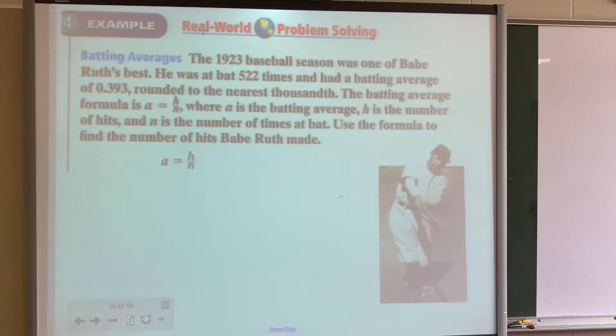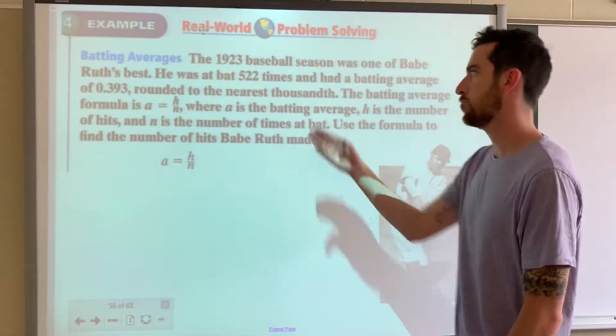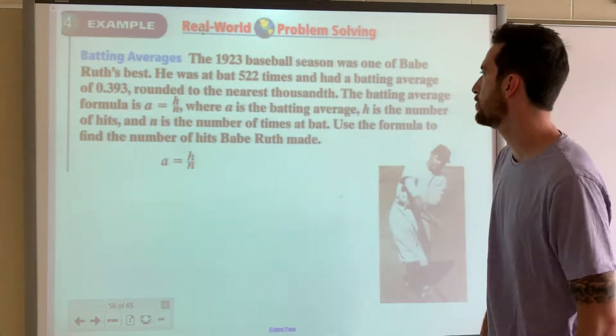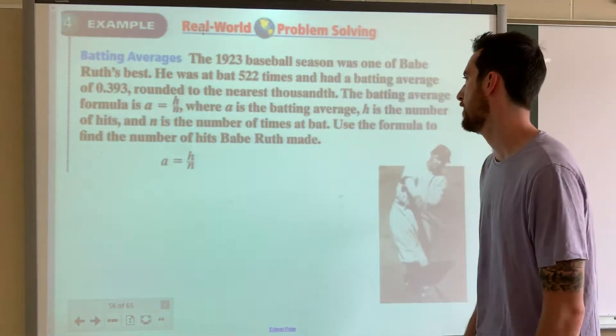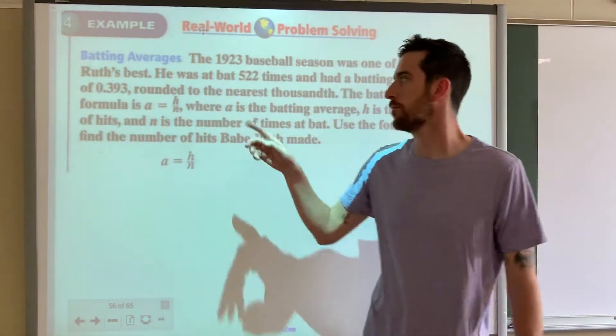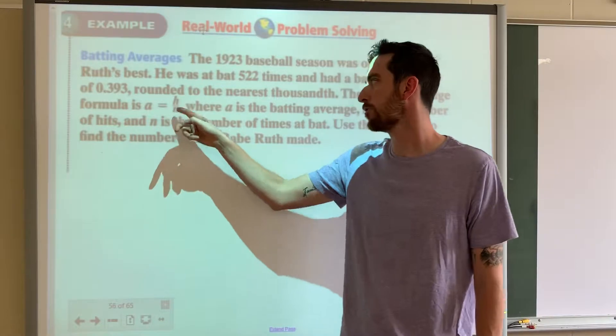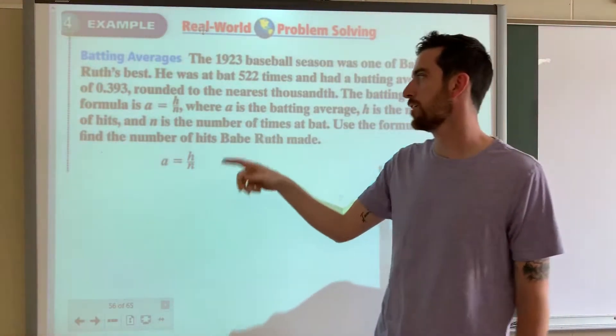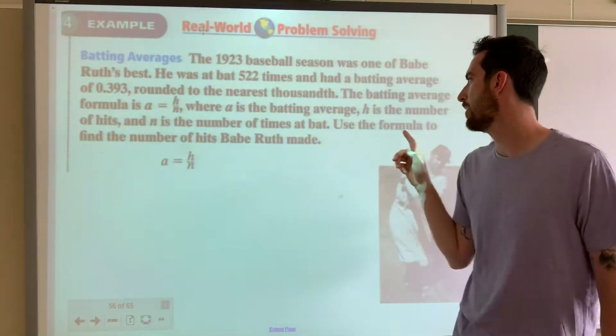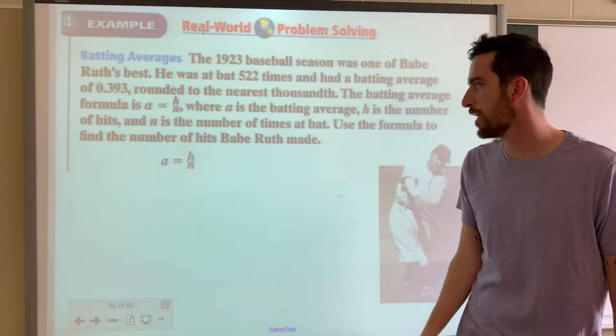The 1923 baseball season was one of Babe Ruth's best. He was at bat 522 times and had a batting average of 0.393 rounded to the nearest thousandth. The batting average formula is A equals H over N, where A is the batting average, H is the number of hits, and N is the number of times at bat. Use the formula to find the number of hits Babe Ruth made.